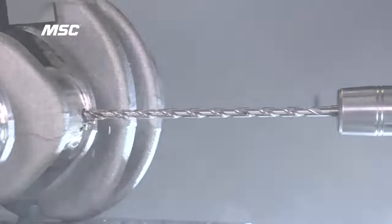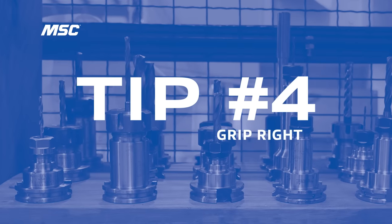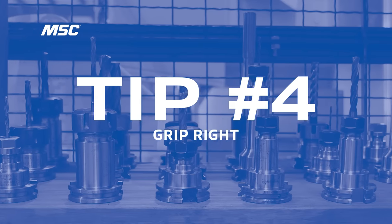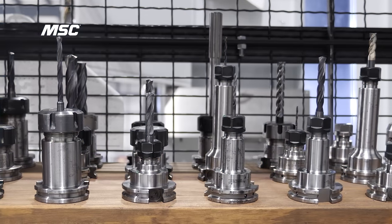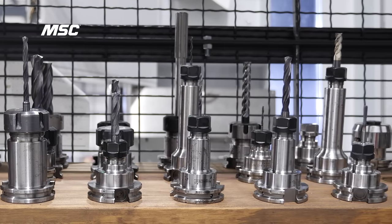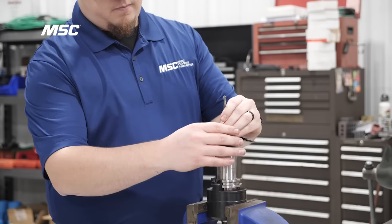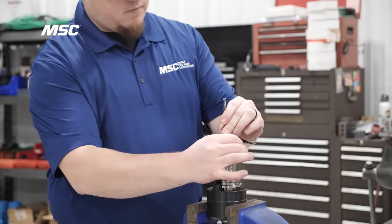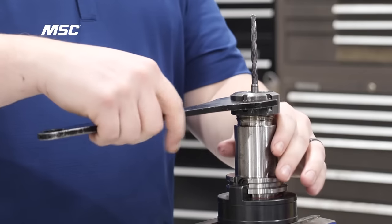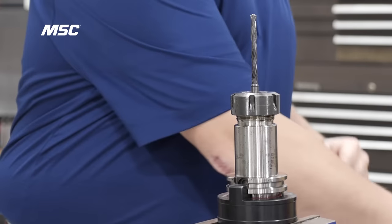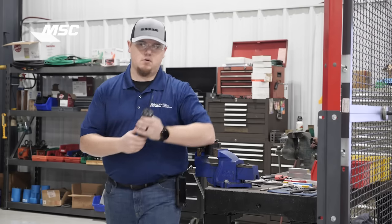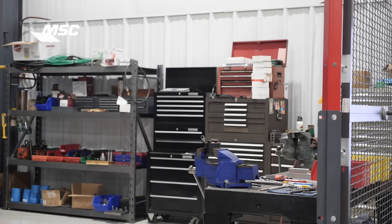Tip number four is gripping right. In a world of work holding, your choices range from mechanical to shrink fit or even ER collets. Though hydraulic holders are widely popular, ER collets also work just fine for smaller diameter drills. But when you're using ER collets, it's very important to not over tighten them as they can create issues with concentricity.